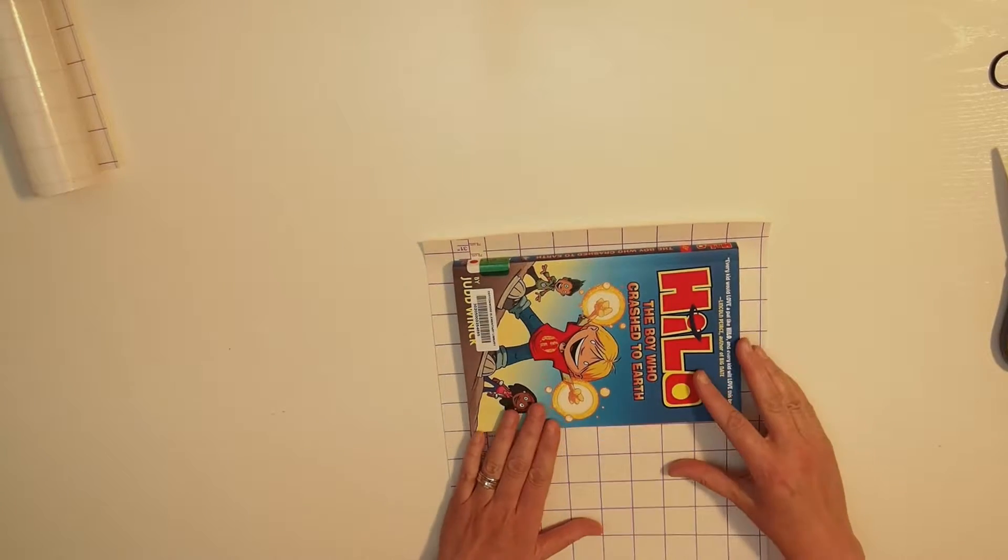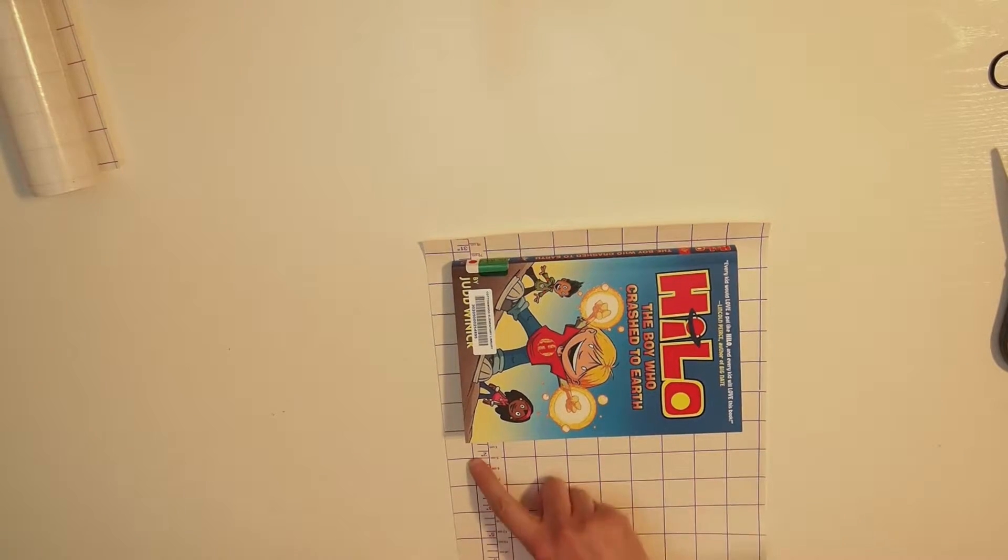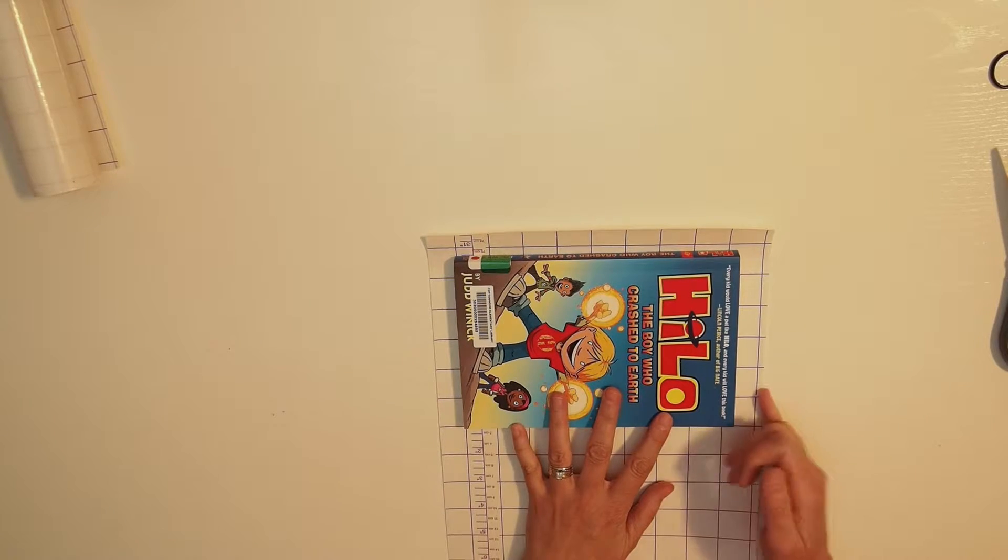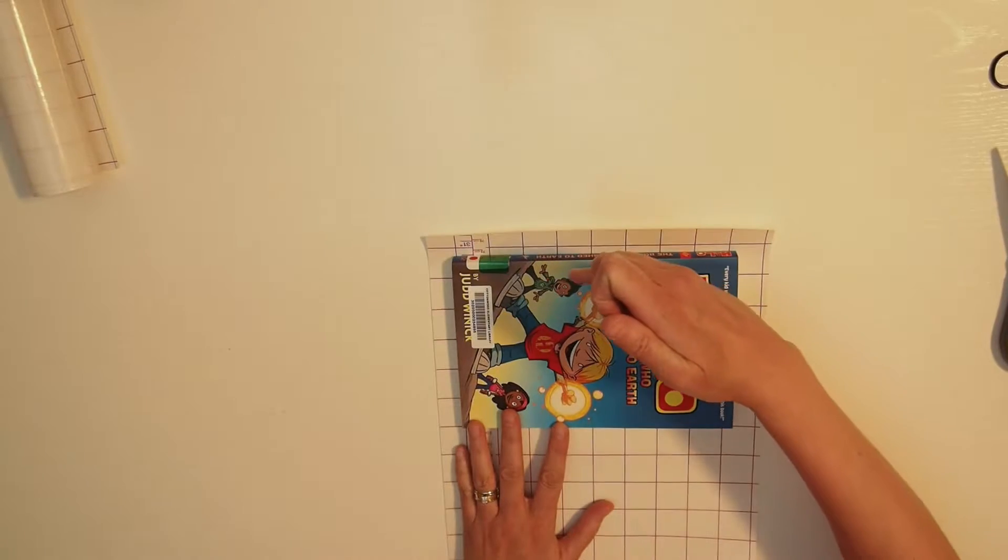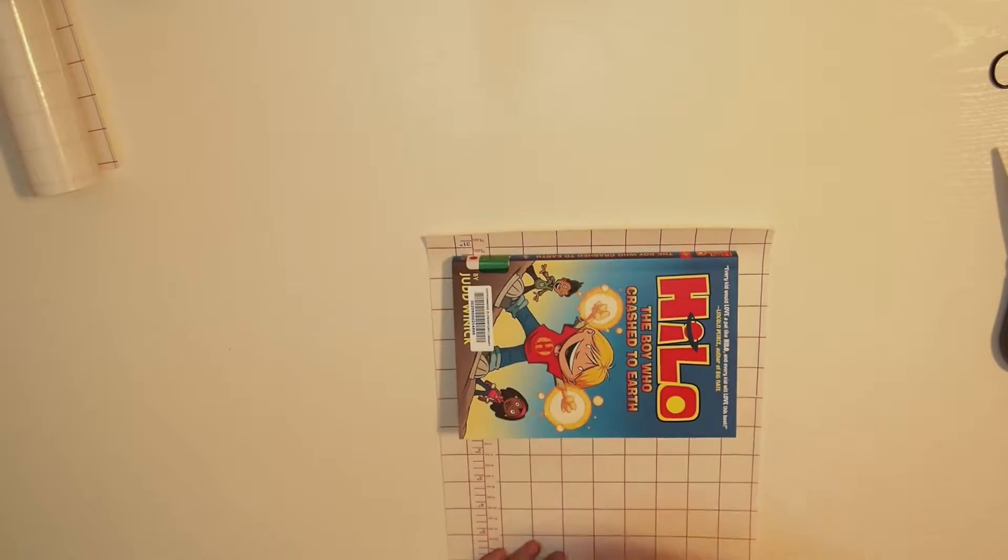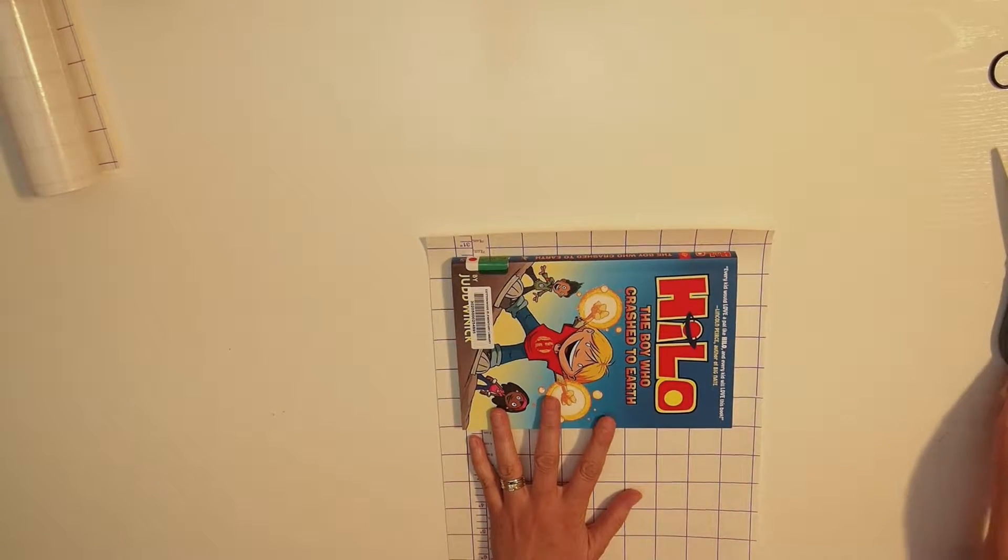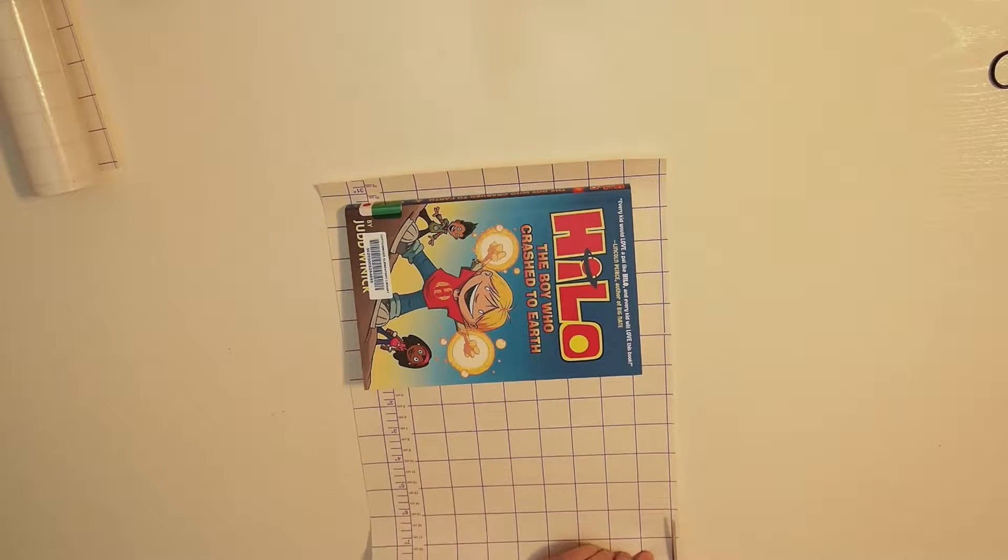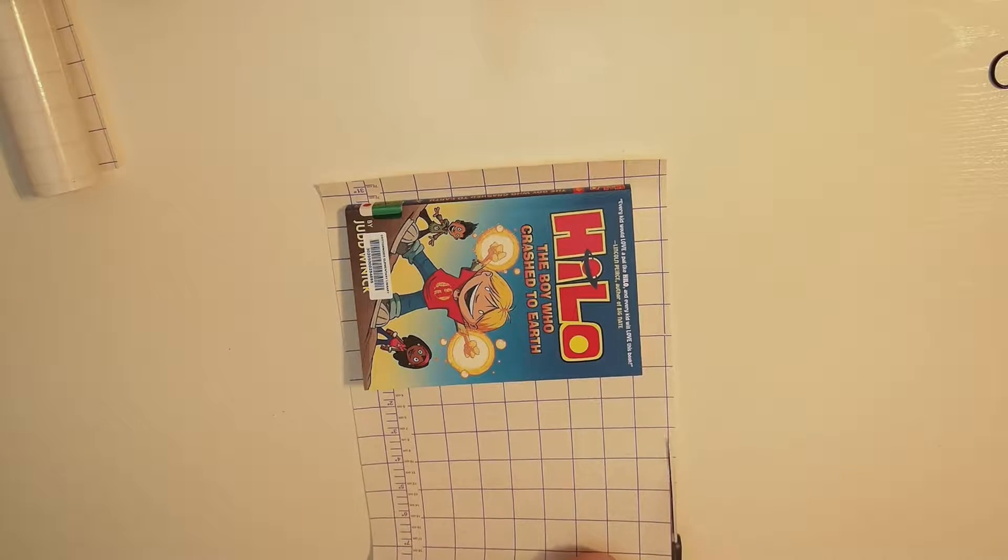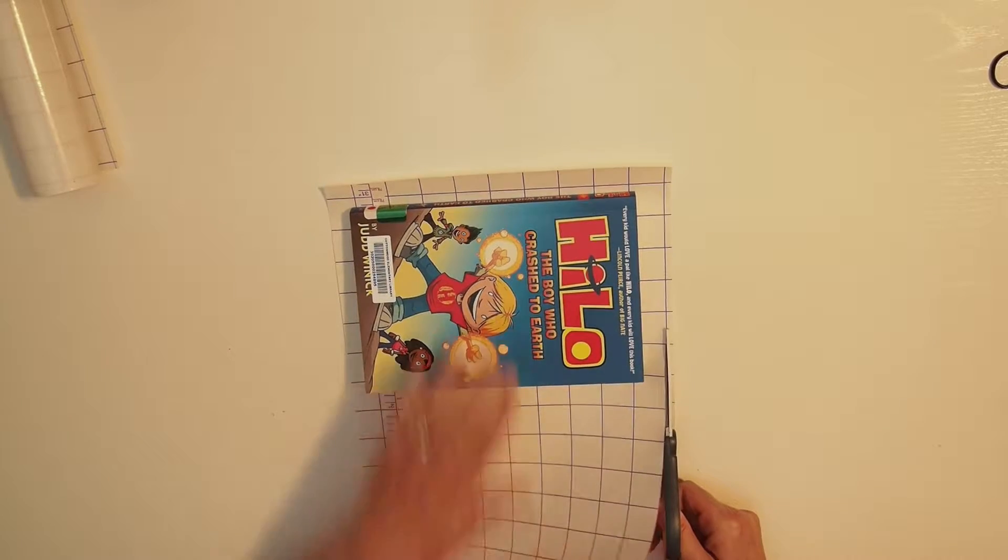This is roughly an inch, this is roughly an inch, because we've got our three-fourths of an inch margin on each edge. Pretty close. I'm going to go ahead and just trim this top edge off. I like to use the weight of the book to weigh down the paper.